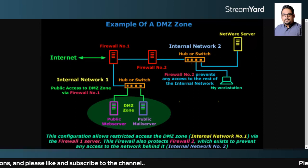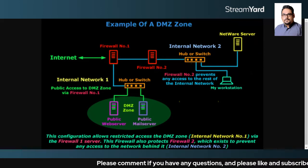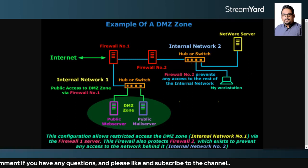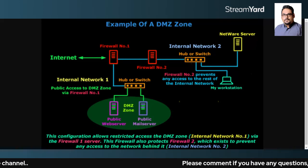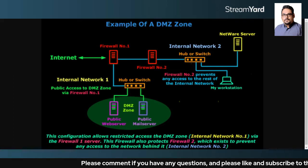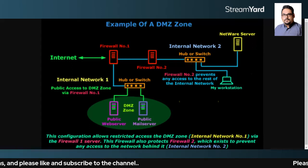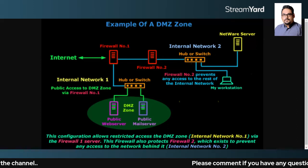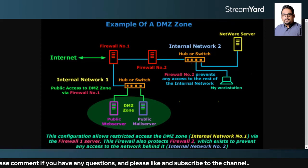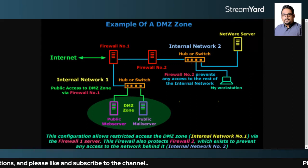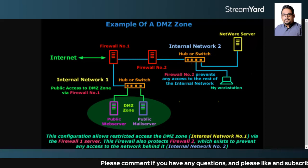DMZ separates those servers from your internal network and isolates them so that if they are compromised — say somebody gains access to your web server or email server — they cannot find their way into the internal network. You have a second firewall to ensure the internal network stays intact. Firewall one allows only the ports the public servers need; firewall two denies any access to the internal network entirely.